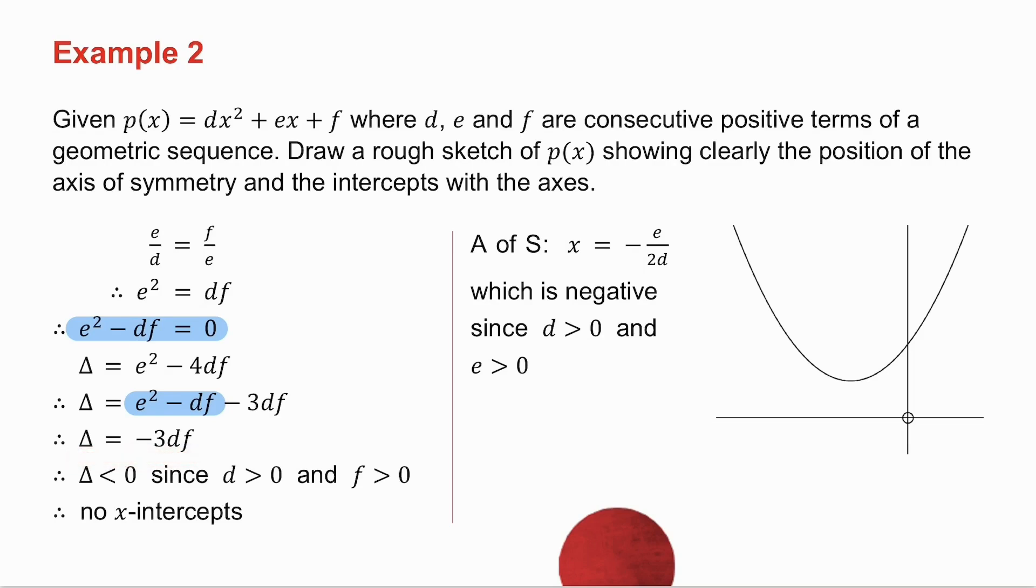Now, you know that D is positive and F is positive, which means that minus 3 D F is negative. And if delta is negative, I have no X intercepts, which means my entire parabola is going to be above the X axis because D is positive. So the arms are going up. My axis of symmetry is X equals minus B over 2 A. So in this example, it's X equals minus E over 2 D.